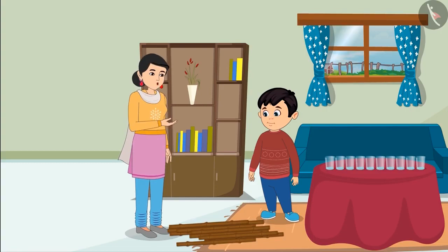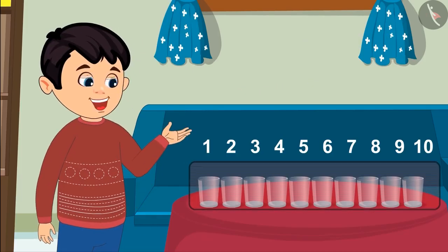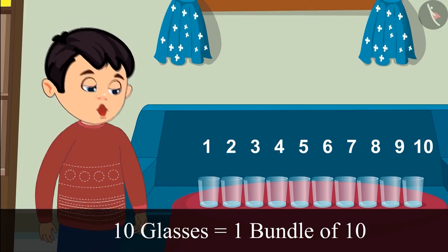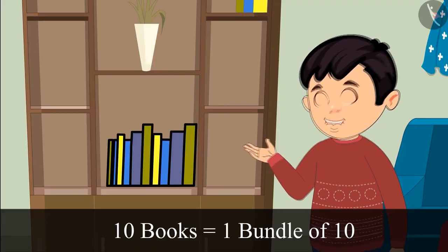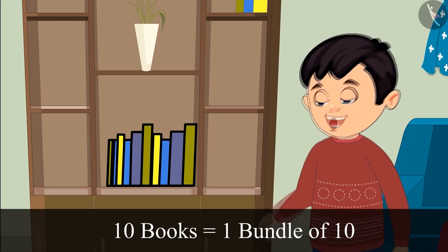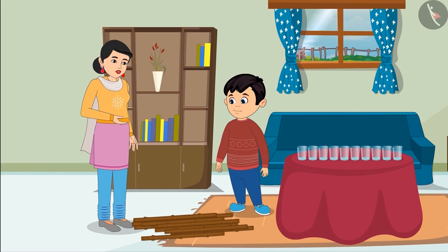Can you spot some objects in this room which are in a bundle of 10, Choto? Yes mummy, these are 10 glasses, so we can call their group a bundle of 10. Similarly, those books are also 10, so they are also making a bundle of 10. Right mummy? Yes Choto, you are absolutely correct, very good.